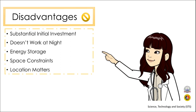Now let us move on to the disadvantages of solar energy. The disadvantages include a substantial initial investment, since the initial installation of a solar power system can be quite costly upfront. It also doesn't work at night. Problems with energy storage are evident if you don't use your solar energy immediately — it will have to be stored in batteries, which can be both costly and space-consuming. Space constraints are also an issue: the more electricity you need, the more solar panels you will need. And lastly, location matters — although the sun is abundant, its intensity and availability can vary throughout the world, and some places may have rainier and cloudier weather conditions.